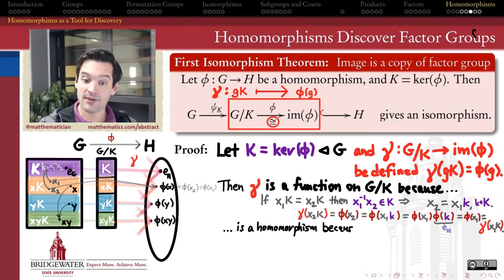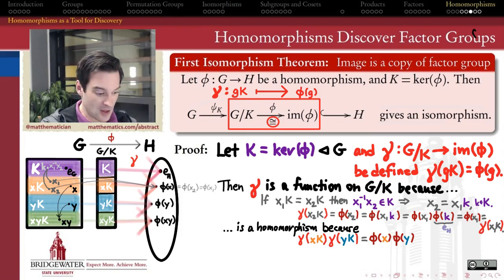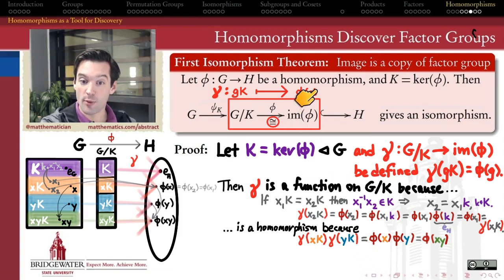Now, why is gamma a homomorphism? If I take gamma of XK and gamma of YK and I multiply them together, what am I going to get? Well, by the definition of gamma, gamma of XK is phi of X. So it's sending the coset XK to the element phi of X inside of H. Gamma of YK is sending the coset YK to the element phi of Y inside of H. But on the other hand, because phi is a homomorphism by presumption, this product is equal to phi of the product, XY.